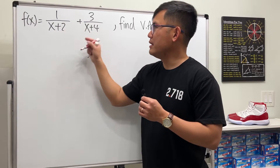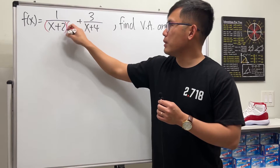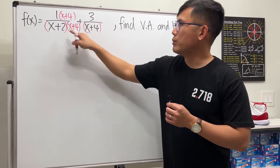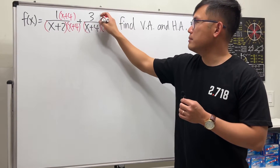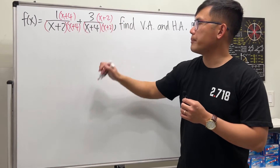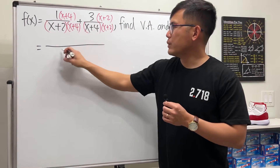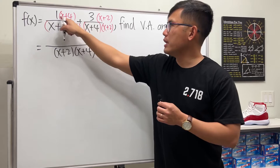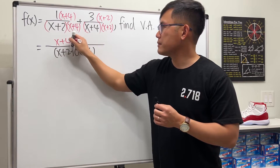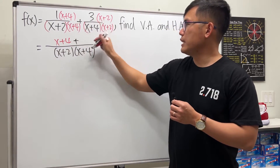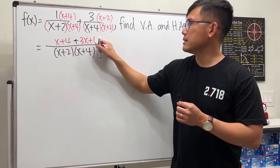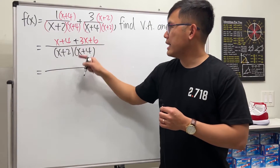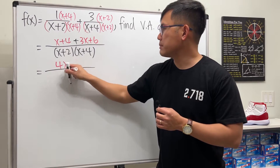To combine these two, we need a common denominator. For the first one, we will need to multiply by (x+4) on the bottom and do the same on the top. For the second one, we will need to multiply by (x+2) on the bottom and do the same on the top. On the bottom, we have (x+2) times (x+4). Multiplying out the top, we get x+4, plus 3 times that which is 3x+6. Combining the top gives us 4x+10.